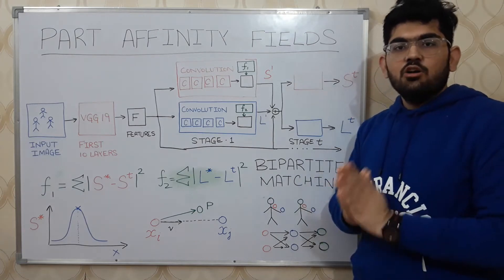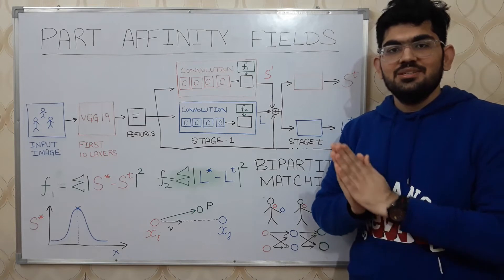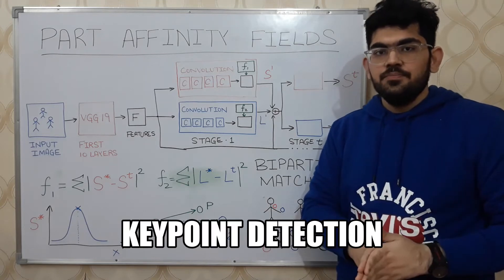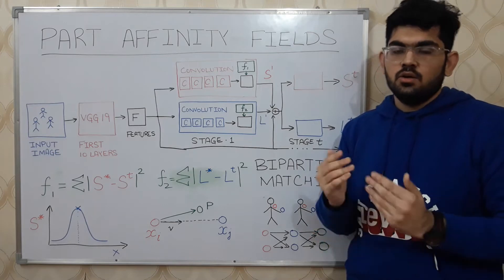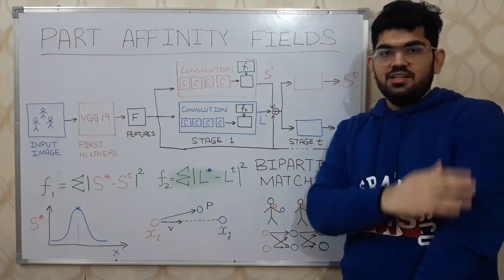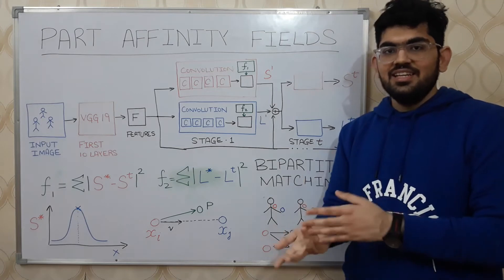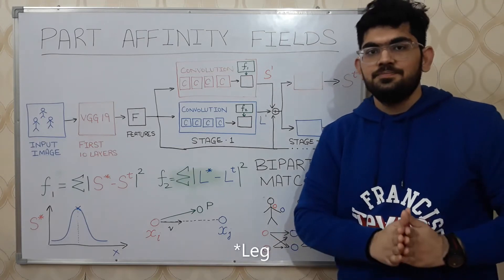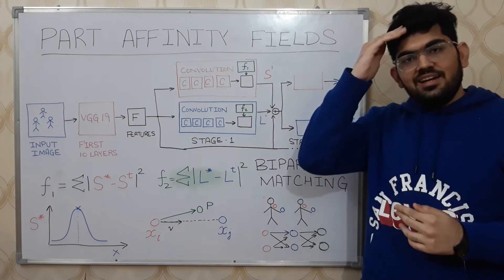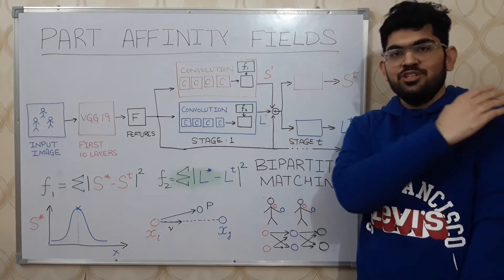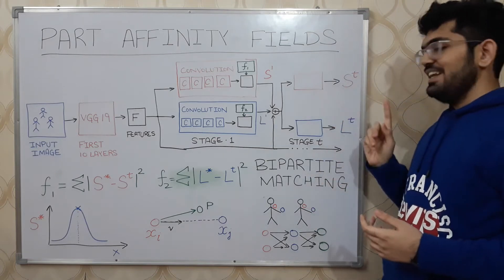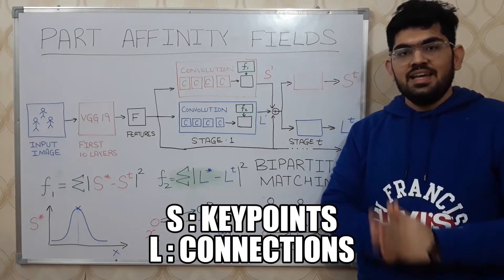Now let us discuss what the outputs S and L represent. The human pose estimation problem can be divided into two sub-problems. The first is key point detection — we need to detect key points such as the head, chest, shoulder, elbow, and hand. The second problem is to connect these key points in a sequential and correct manner — for instance, head to chest, chest to shoulder, shoulder to elbow, and elbow to hand. S represents the key points and L represents those connections.